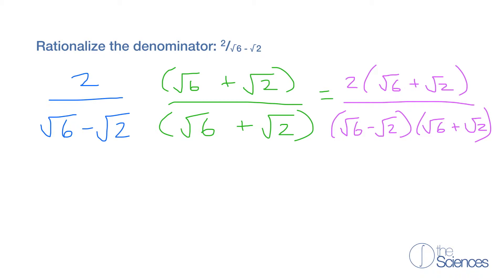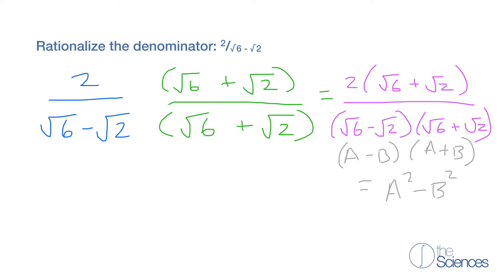In our denominator, we have the difference of two squares. We have a minus b times a plus b, which is also equal to a squared minus b squared. So now we can write our equation using this format.